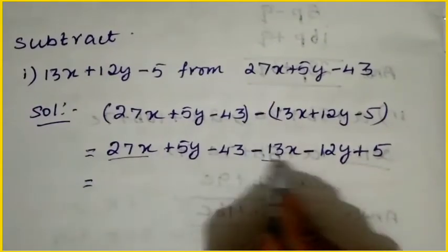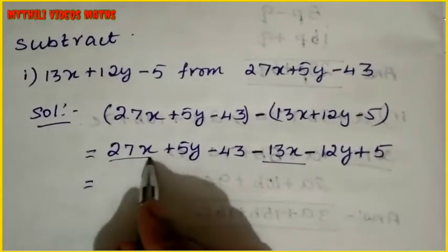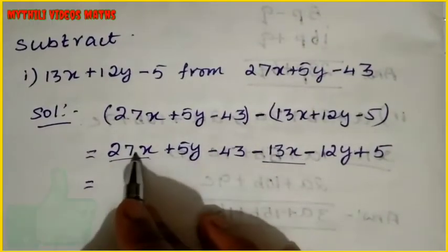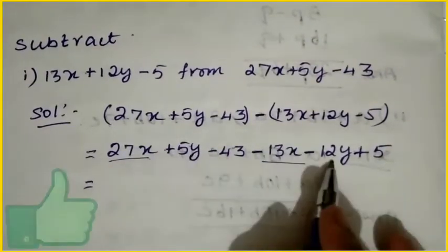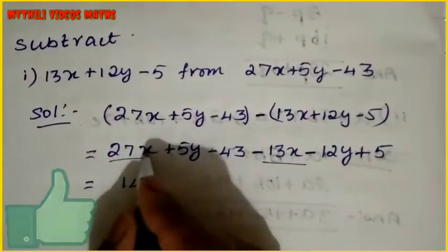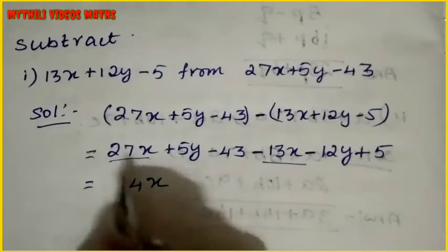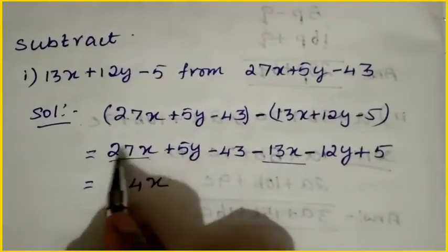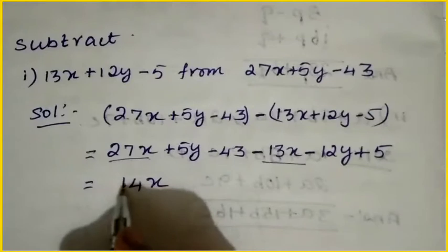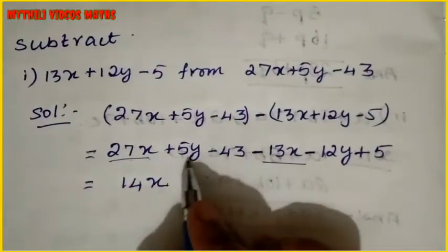Now we have to add the x term. We have plus 27x and minus 13x. We have to subtract: 27 minus 13 equals 14. The bigger number is 27, which has a plus symbol, so just write 14x.